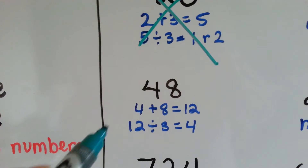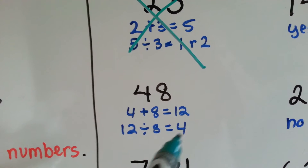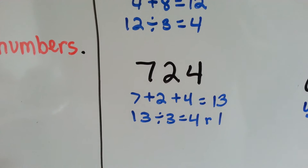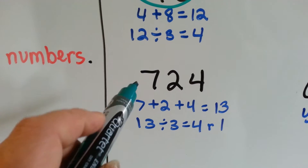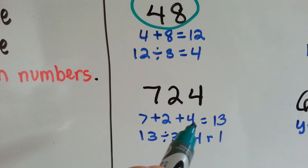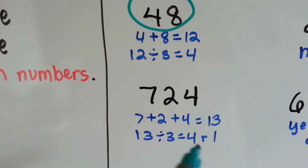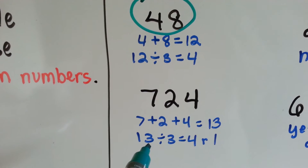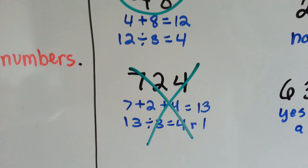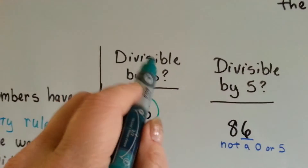How about 48? Let's add the 4 plus the 8 and we get 12. 12 divided by 3 is 4, because 3 times 4 is 12. So yes, 48 is divisible by 3. How about a big number like 724? Let's add them up: 7 plus 2 plus 4 is 13. 13 divided by 3 is 4 with a remainder of 1 — 3 times 4 is 12, and we need one more to get to 13. Because the remainder is 1, it is not divisible by 3. You add them together and see if you can divide by 3.